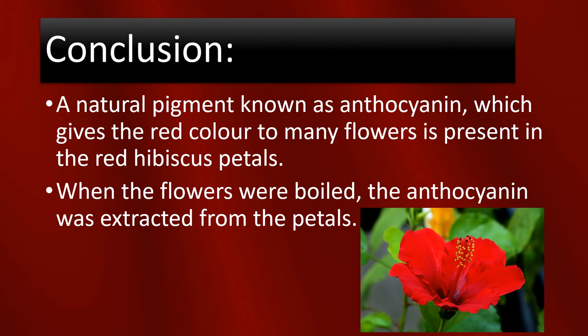Now let's conclude what we saw in this video. A natural pigment known as anthocyanin, which gives the red colour to many flowers, is present in the red hibiscus petals. When the flowers were boiled, the anthocyanin was extracted from the petals. This anthocyanin reacts with acids and bases to form a change in colour.